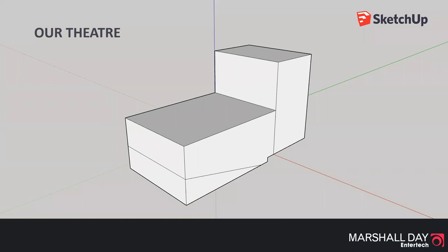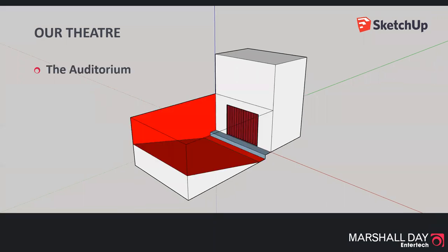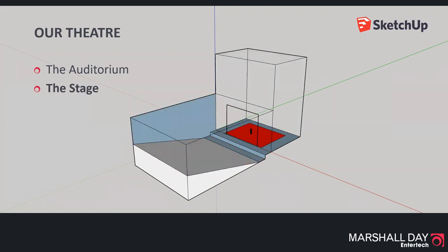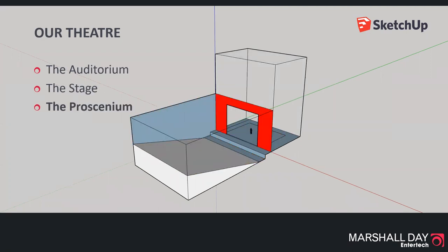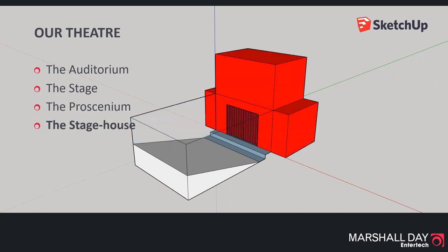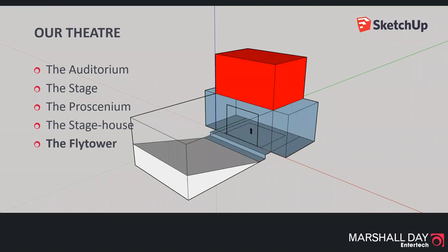So here we have our theatre. We have the auditorium where the audience sits, we have the stage, we have the proscenium — which not all theatres have — and we have the stage house, which includes the stage itself, the wings, possibly rear stage, and the fly tower, which is the tower above the stage house.